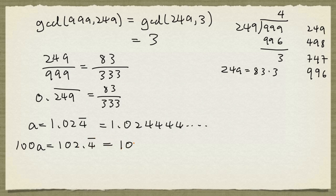So 100a is going to be 102.4 repeated. And I can now break this into 102 plus 0.4 repeated. And this is in the form that we can handle. So this is 102 plus 4 over 9. Our pattern is just a single digit 4, so we have a single digit 9 in the denominator.